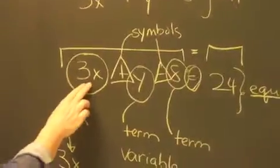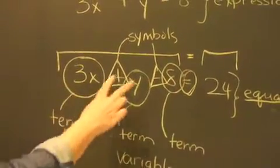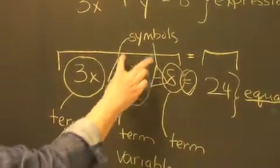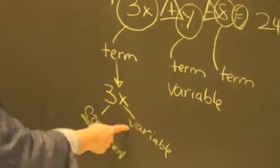I said, okay, this whole piece is an expression. The expression can be broken down into parts — there are either terms or symbols. So I drew on the board and showed him the terms and the symbols, and then I said, okay, now the terms can be broken down into parts. They have variables or coefficients.